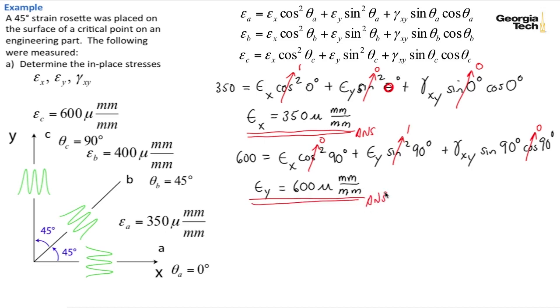Finally, we'll use the epsilon_b, the third equation. And so we have epsilon_b is measured to be 400 micro. And 400 micro is equal to, and I guess I was going to leave the micro's off, so let's erase that off. And we'll put it in the answers. But we have 400 times epsilon_x cosine squared 45 degrees plus gamma_xy sine of 45 degrees cosine of 45 degrees.